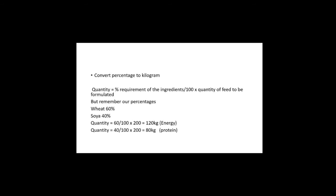The formula to convert percentage to kilogram is: quantity of ingredient = (percentage / 100) × quantity of feed to be formulated. For wheat with 60%: (60 / 100) × 200 = 120 kg of energy ingredient. For soya with 40%: (40 / 100) × 200 = 80 kg of protein ingredient. That is how to calculate the ingredient amounts in kilograms.